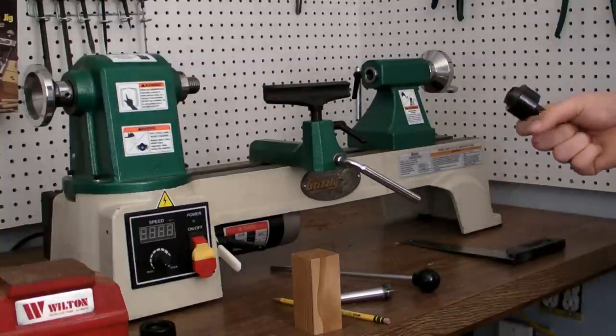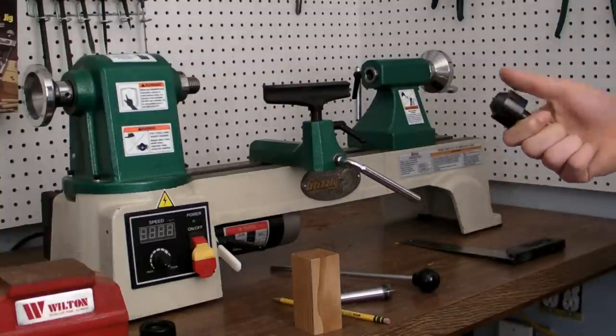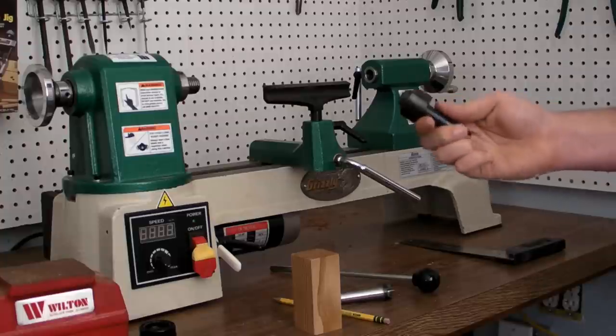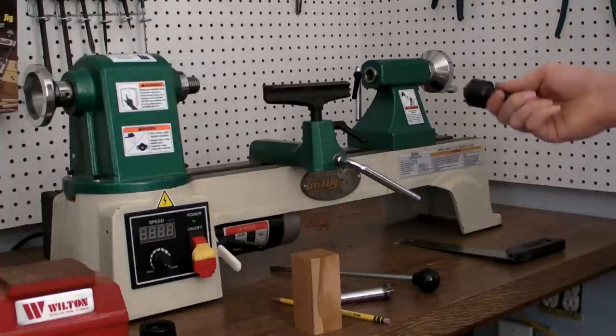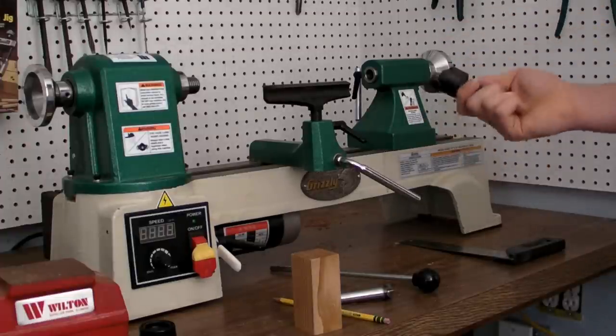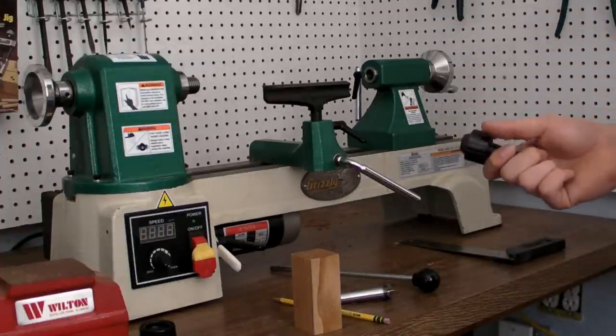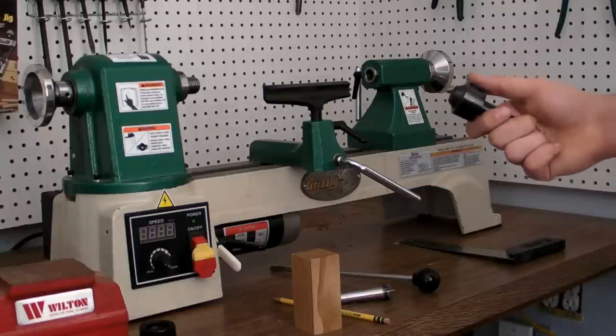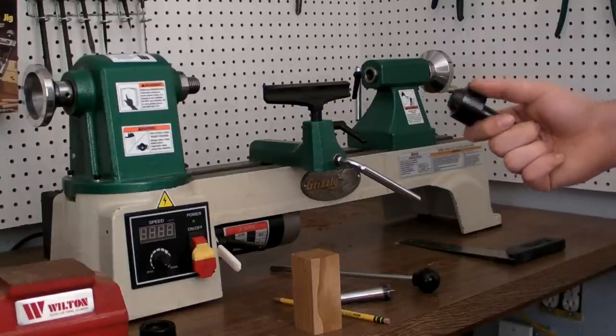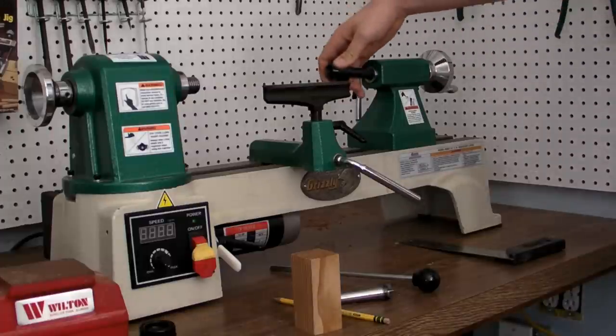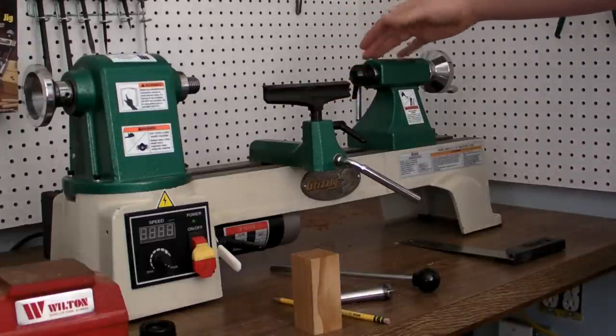We have the live center. Now, the live center is interesting. There's both the live center and the dead center. The live center, as you can see, spins. It rotates with the wood when it's on your lathe. Dead centers, however, don't rotate. The live center was invented because the dead centers damage part of your wood and make it unusable. Your live center simply fits into your tail stock.